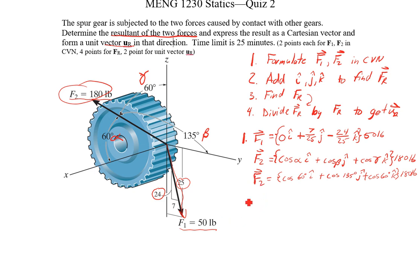So filling in values here, I'm going to write these out. So popping this in our calculator times 50, well this works out pretty nice, 50 divided by 25 is 2. So F1 is going to be 0 I, I'm going to put my units on the outside here, plus 14 J minus 48 K pounds. F2, cosine of 60 is 1 half, so I'm going to get 90 I minus 127.28 is what I get when I pop that in a calculator J, so that's a product of cosine 135 and 180. And then K is still cosine 60, so we're going to have plus 90 K, and that's pounds. So that's the end of step 1.